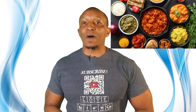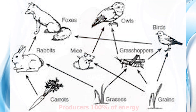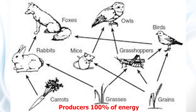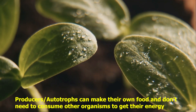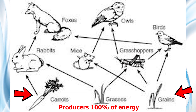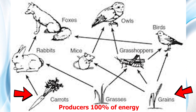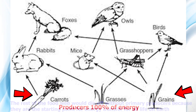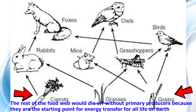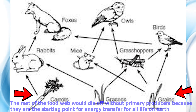If you notice, the producers are always at the bottom of a food web because they contain 100% of the energy. This makes sense because producers, or autotrophs, can make their own food and don't need to consume other organisms to get their energy. The carrots, grass, and grains are the key foundational pieces for this food web — they contain 100% of the energy. Without these primary producers, the rest of the food web would die off, because primary producers are the starting point for all energy transfer for life on Earth.